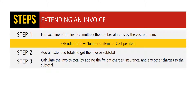Let's take a look at the steps to extend and total an invoice. Step 1: from each line of the invoice, multiply the number of items by the cost per item. Extended totals equal the number of items times cost per item. Step 2: add all the extended totals together to get an invoice subtotal. Step 3: calculate the invoice total by adding freight charges, insurance, and any other charges to the subtotal.